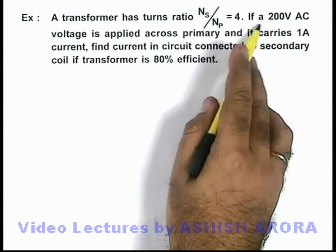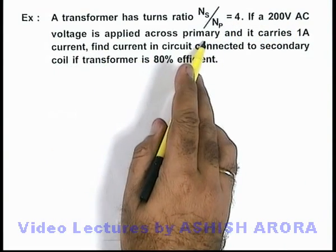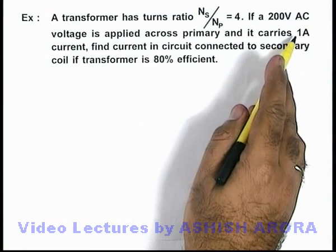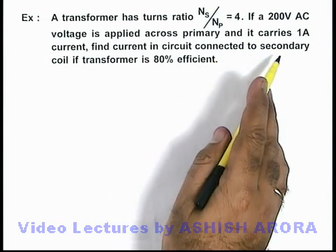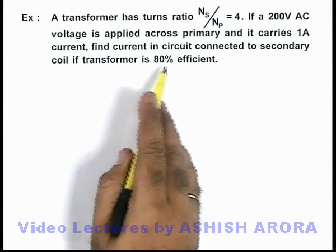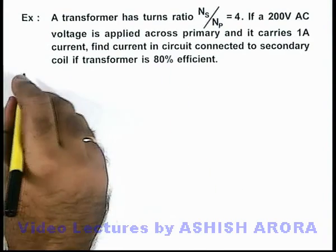It is saying if a 200 volt AC voltage is applied across the primary and it carries a current of 1 ampere, we are required to find the current in the circuit connected to the secondary coil if the transformer is 80 percent efficient in this particular situation.